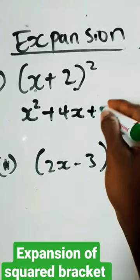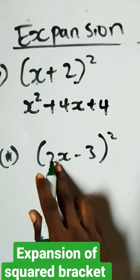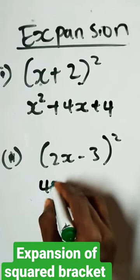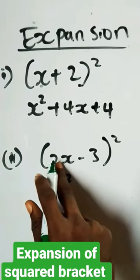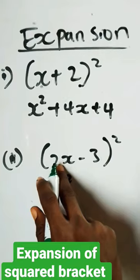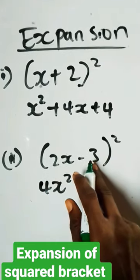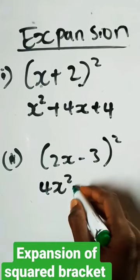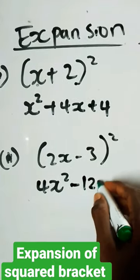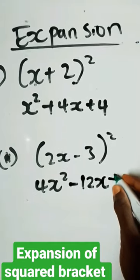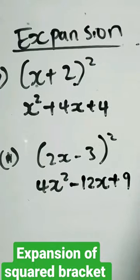Then for here we do the same thing. We have 4x squared for squaring this, then multiply this by 2, have 4x, multiply that 4x by 3, we have minus 12x. Then square this last value, you have plus 9. That's our final answer.